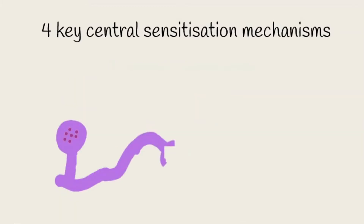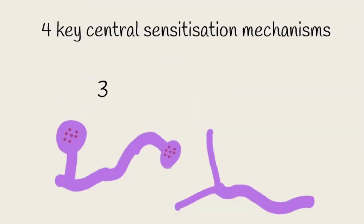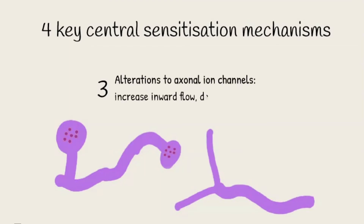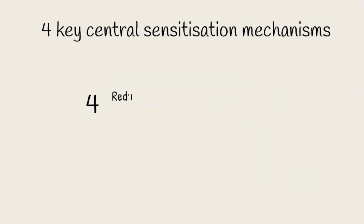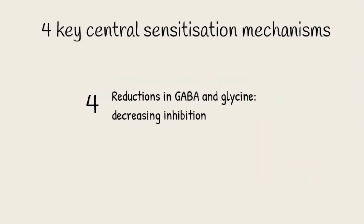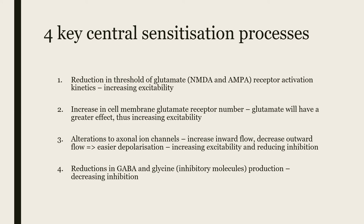A third key process is alterations to axonal ion channels. This would cause an increased inward flow and a decreased outward flow of ions, again making depolarization of the neuron easier, further increasing excitability and reducing inhibition. The fourth central sensitization process is a reduction in inhibitory GABA and glycine production. This reduction in inhibition therefore increases the activity of the nociceptive neurons.